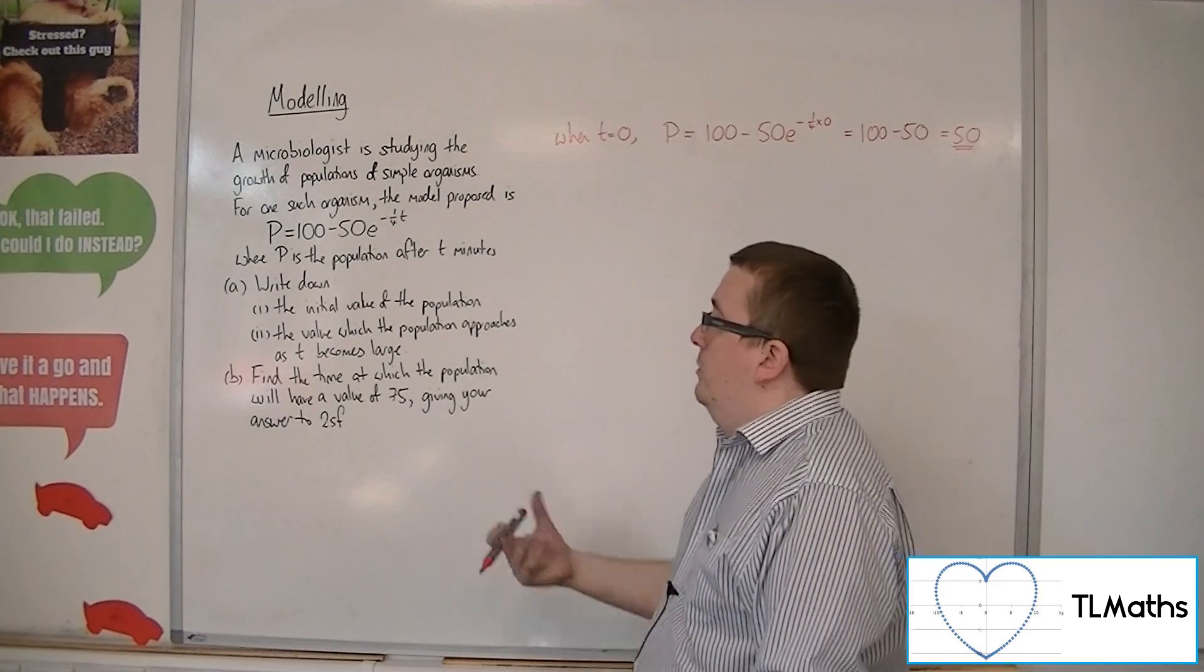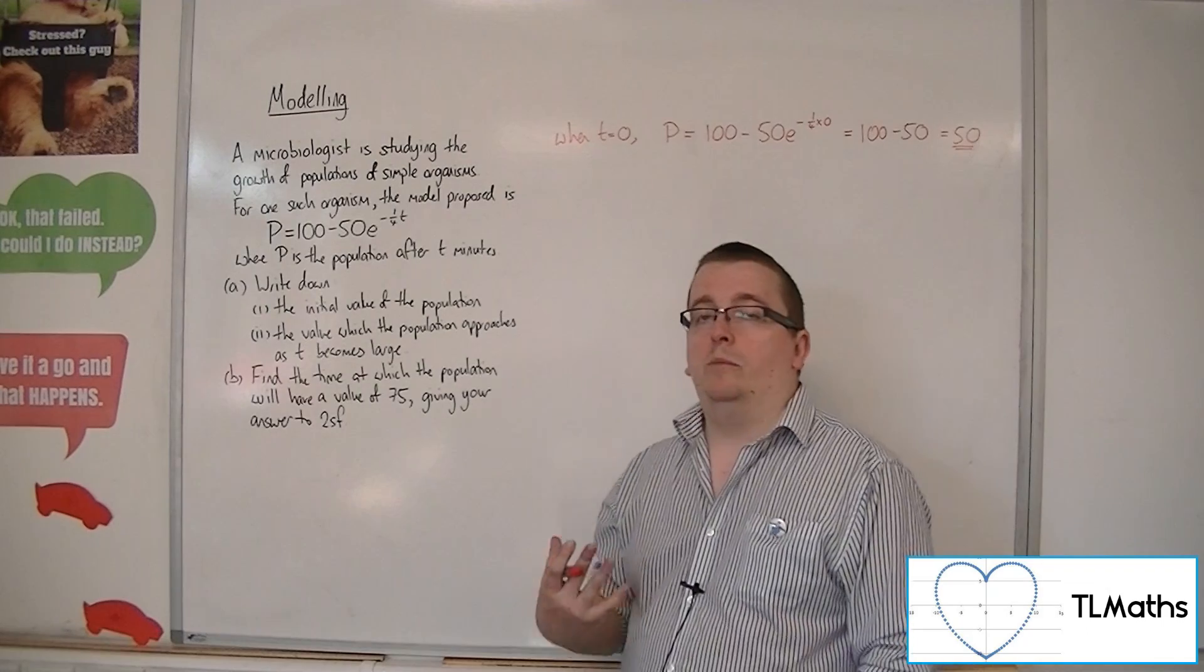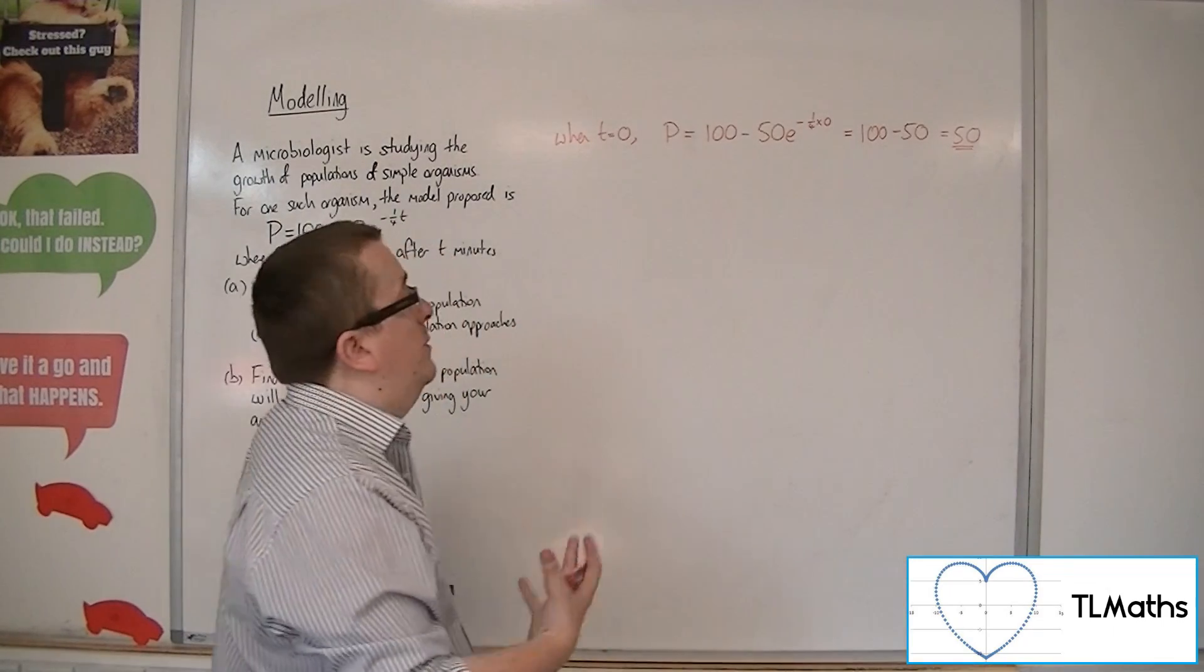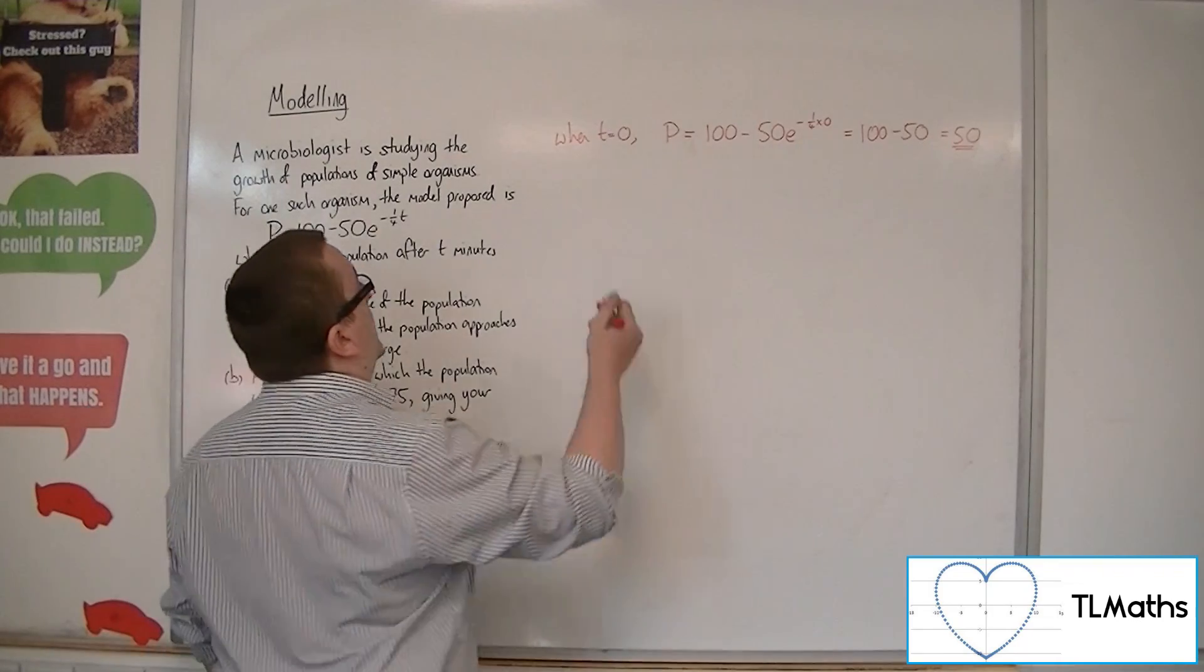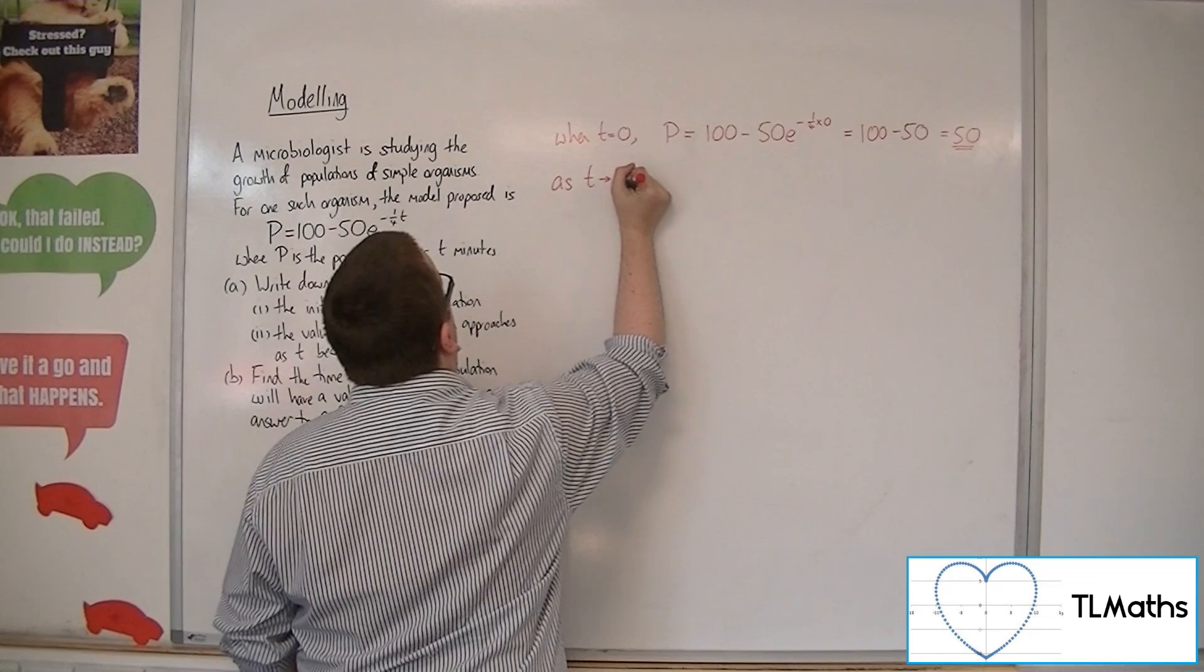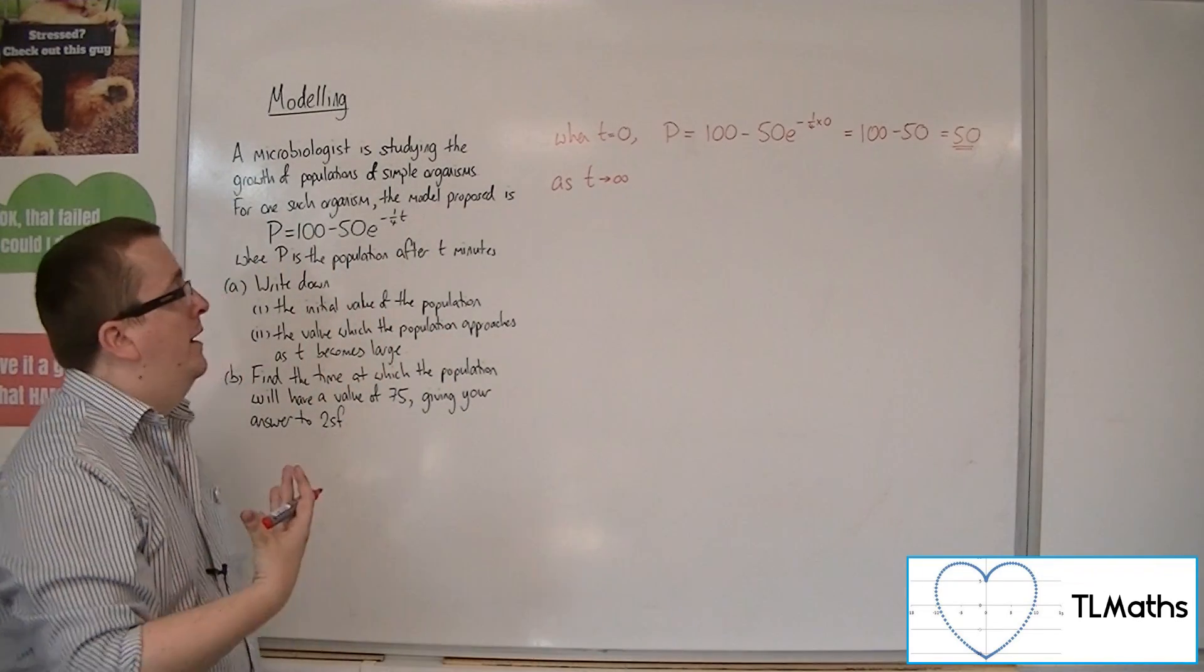The value, so part 2, the value which the population approaches as t becomes large. So when we say t becomes large, we're saying as t approaches infinity. So as t gets larger and larger and larger.